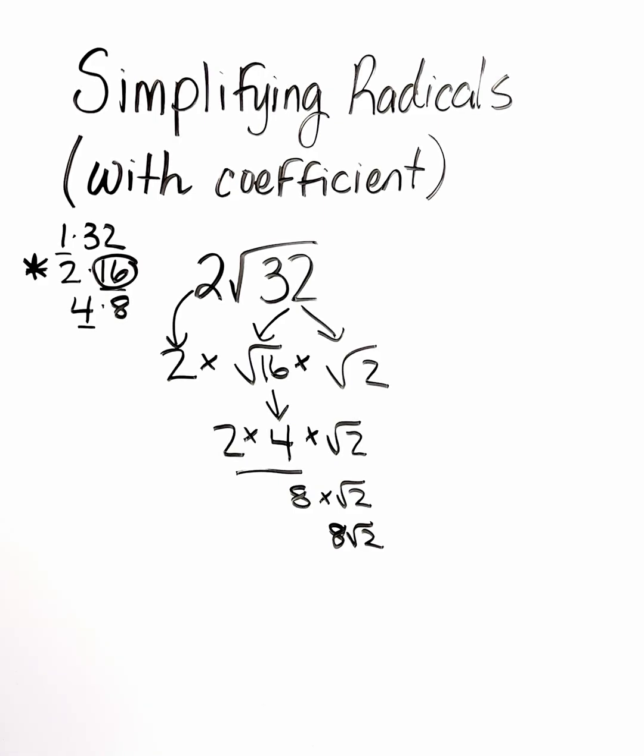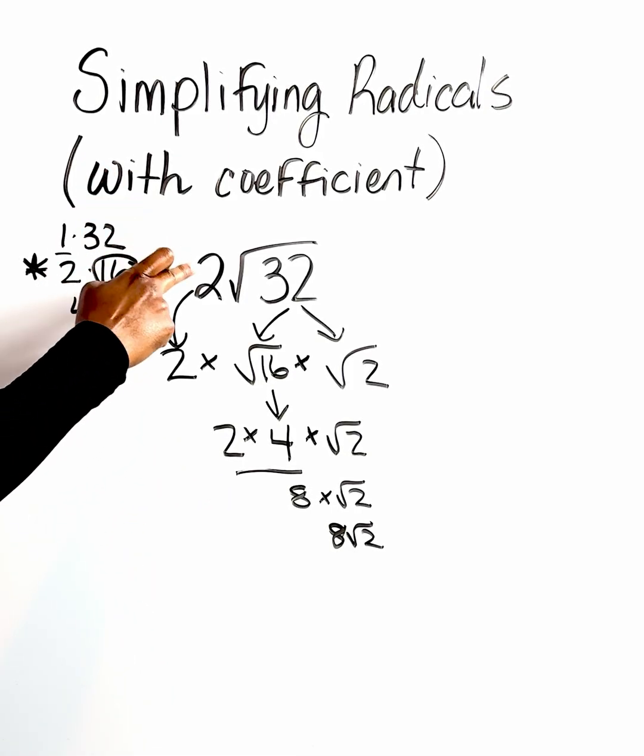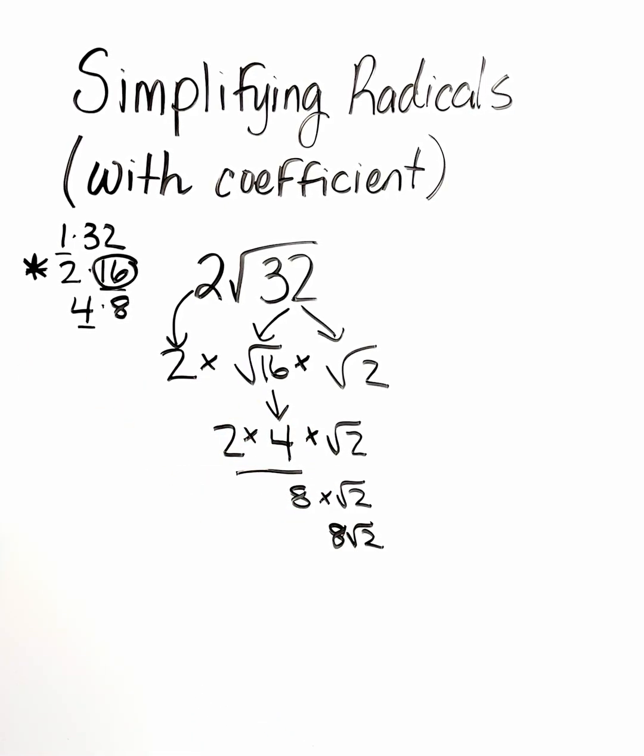So there's only one extra step outside of simplifying radicals without a coefficient. We just have to multiply the number in the front times whatever our perfect square root is once it's simplified. And other than that, you guys are good to go. That was example two. So let's go ahead and take a look at practice two.